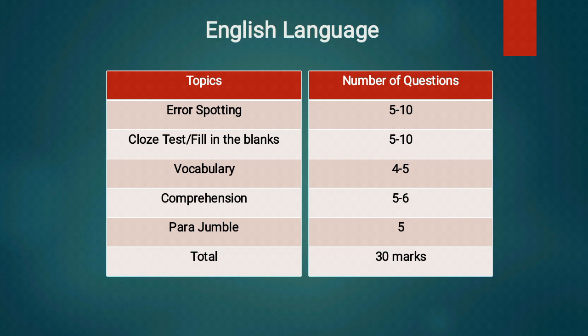Practically speaking, it's not possible to attempt all 30 questions in 20 minutes, और अगर possible भी हुआ तो यह बहुत बड़ी बात होगी कि सारे 30 correct हों। Ideal attempts की बात last में करेंगे, लेकिन attempts बढ़ाने के लिए आपको एक sequence fix करना पड़ेगा और topics shortlist करने पड़ेंगे। For example, हम normally recommend करते हैं कि Jumbled Paragraph जैसे topic को last में रखो या skip करो। 20 minutes में अगर उसने 6-7-8 minutes खा लिए और आप sure नहीं हो, तो वो time और marks दोनों waste होंगे। Reading Comprehension भी आप last में कर सकते हो।